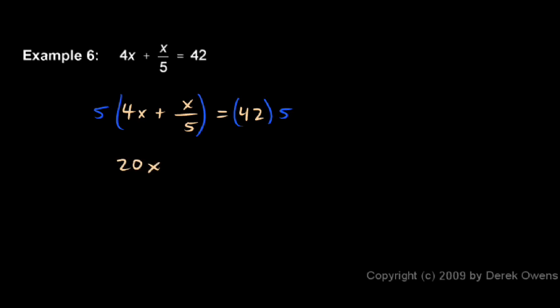And then we have plus, and then 5 times x over 5 is just x. So we have 20x plus x equals 42 times 5.